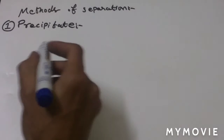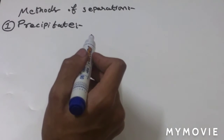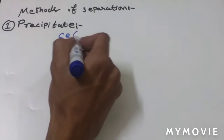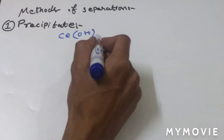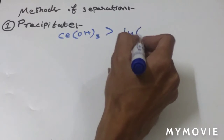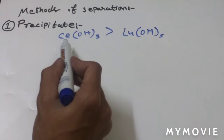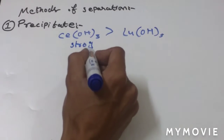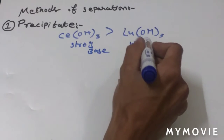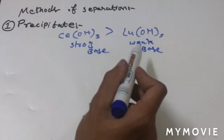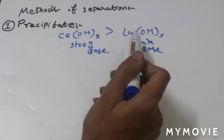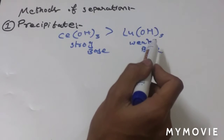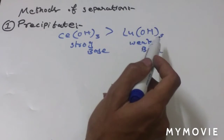The first method is precipitation. As we already know, according to Fajan's rule, when we move from left to right in a period the covalent character increases. Cerium hydroxide is a strong base as compared to lutetium hydroxide, because lutetium makes a stronger covalent bond with OH, making it difficult for lutetium to release OH.